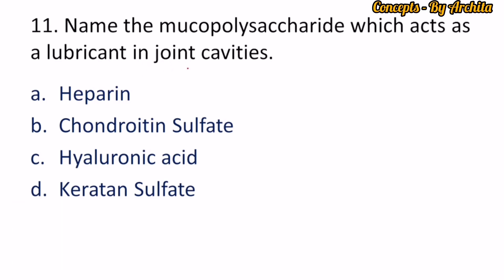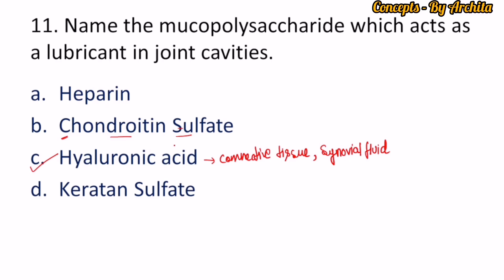Question 11: Name the mucopolysaccharide which acts as a lubricant in the joint cavity. The correct option is option C, hyaluronic acid. Hyaluronic acid is present in connective tissues, tendons, synovial fluid, and vitreous humor — and it acts as a lubricant. Heparin acts as an anticoagulant. Chondroitin sulfate is present in cartilages and bones.